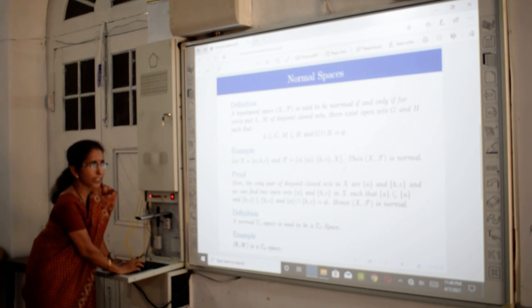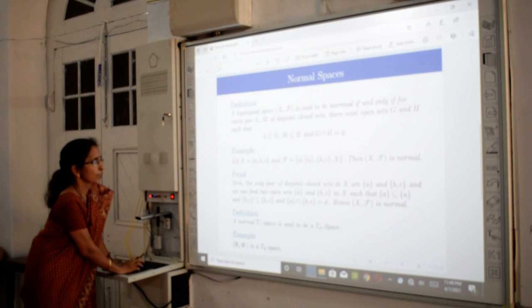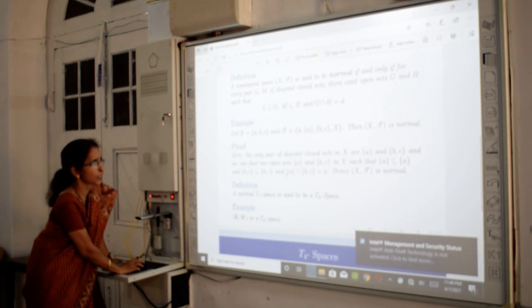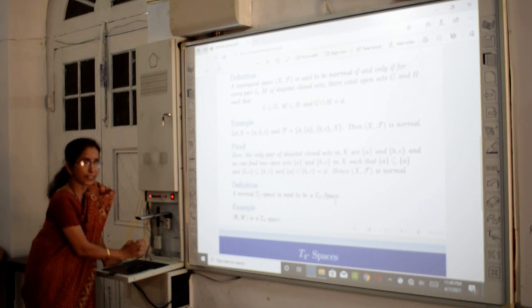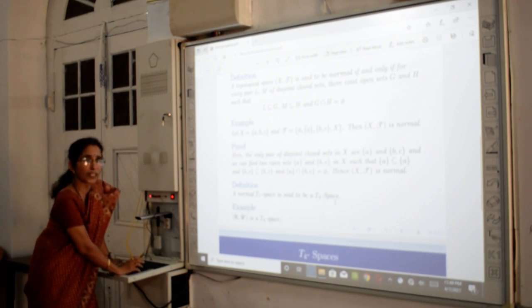Here, there is no need to check for phi and X because they are disjoint and open themselves. Now, for T4 space: a normal T1 space is said to be a T4 space. Earlier, we discussed that a T3 space is regular and T1. And here, we have normal T1 space as T4 space.